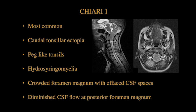Low-lying tonsils can be a differential, where the shape of the tonsil will be round rather than peg-like. Hydrosyringomyelia is one of the characteristic features of this condition. Crowded foramen magnum with effaced CSF spaces is another feature, as is diminished CSF flow at the posterior foramen magnum in CSF flow studies.